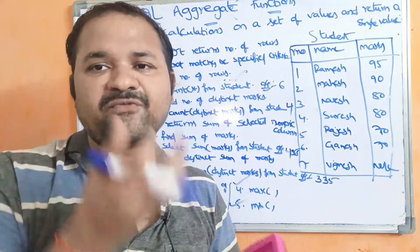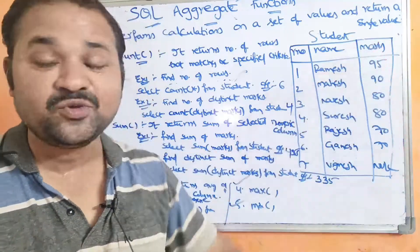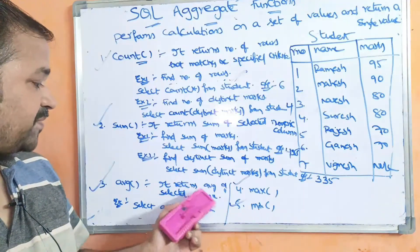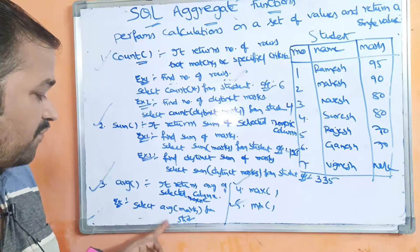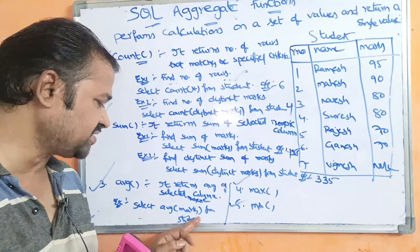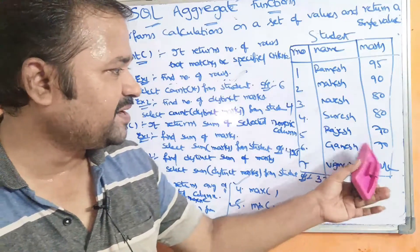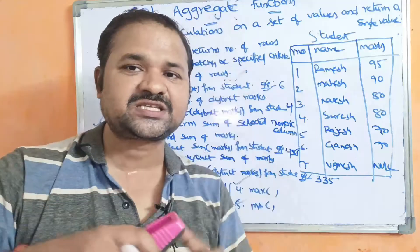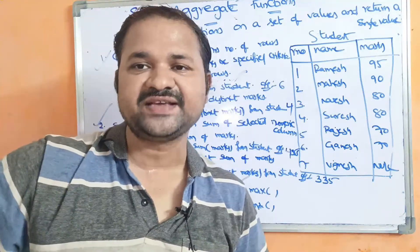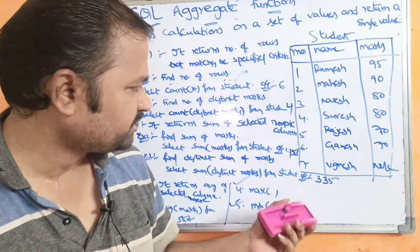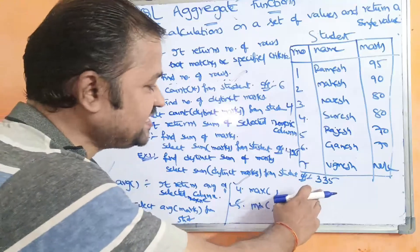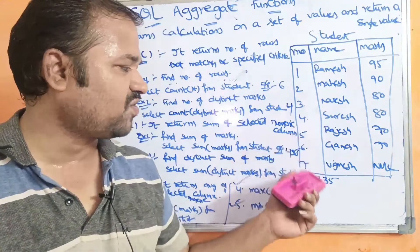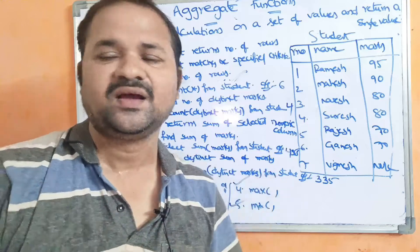Now let us see the average function. It is useful to perform the average operation on a selected numeric column. The query is SELECT AVG(marks) FROM student. These values will be summed and divided by the total number of rows, which is 6. So 485 divided by 6 gives approximately 80-point-something as the output.